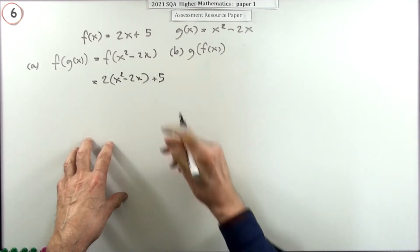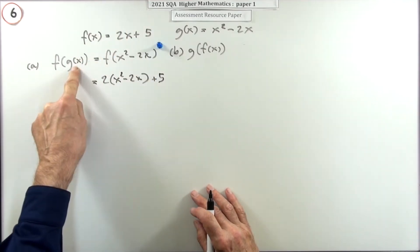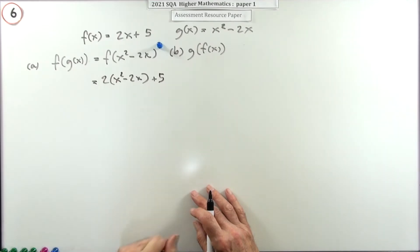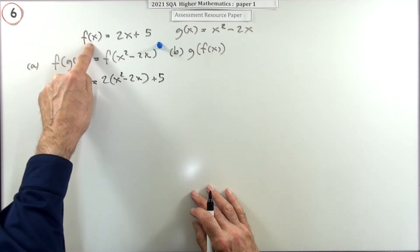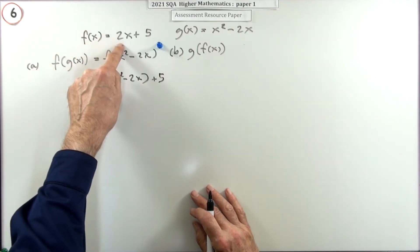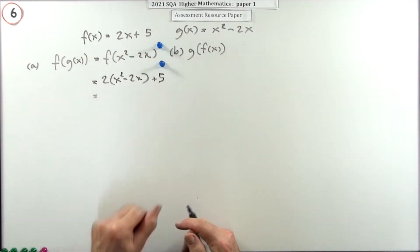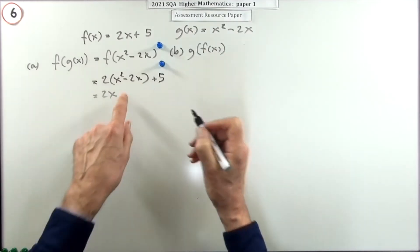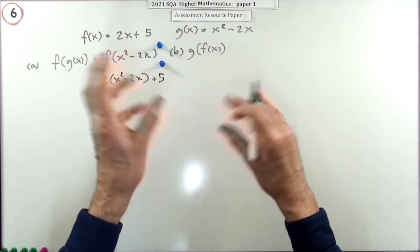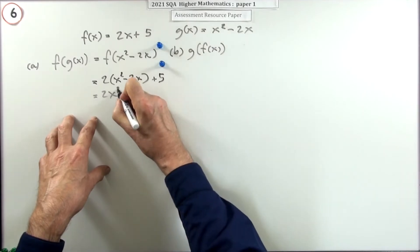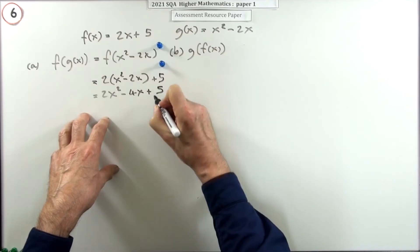So you have two of them and then just add on five. The first mark is for substituting g of x into f of x as its input, and the second mark is for carrying out the operations required by f of x — doubling what you put in and then adding five. You tidy that up: 2x squared minus 4x plus 5 for the first part.